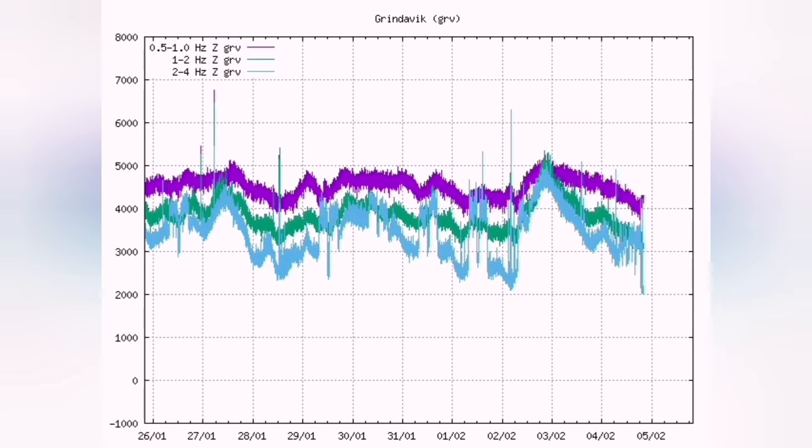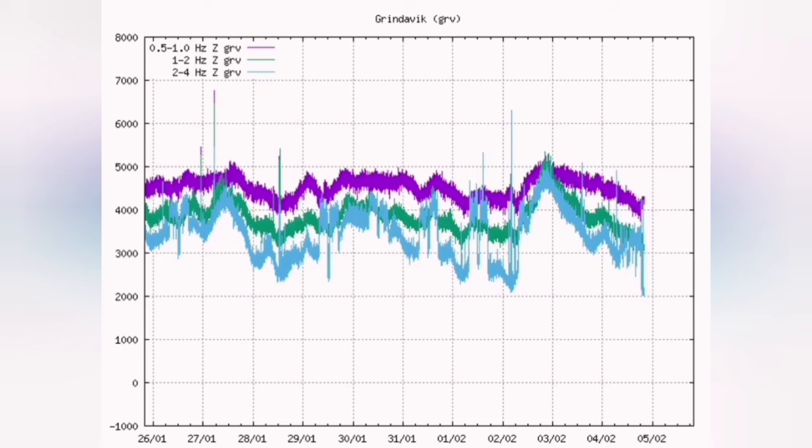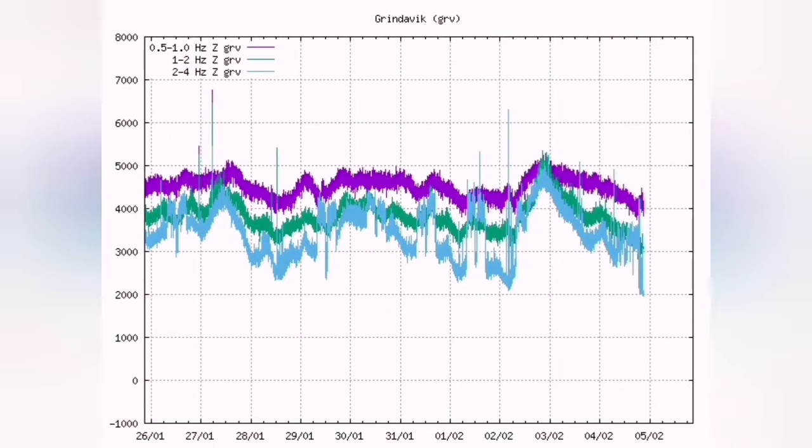The blue line is tectonic and the purple line is magma. It has now reached the level that it was just before the eruption in January 14.